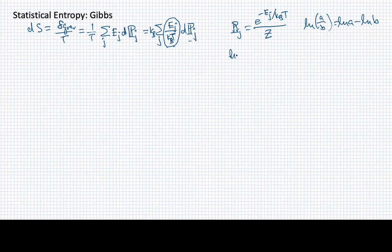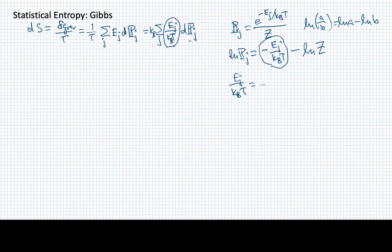So if I take the logarithm of pj, it's going to be the logarithm of what's on top. But when I have an exponential, that's just going to be the argument of the exponential. So I'll have minus ej over kbT for that term, and then I'm going to subtract the logarithm of what's in the bottom. So that's log of z. So now I can solve for this and basically say that e over kbT is equal to minus the logarithm of the probability of the j-th state minus the logarithm of the partition function. I can just plug this in now directly in here and see what that gets me for this incremental change in entropy.